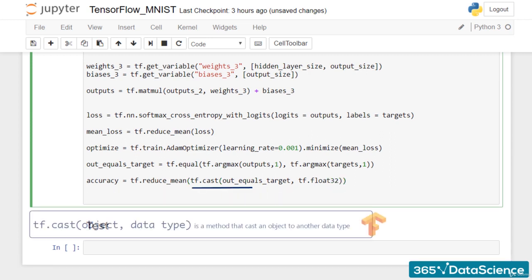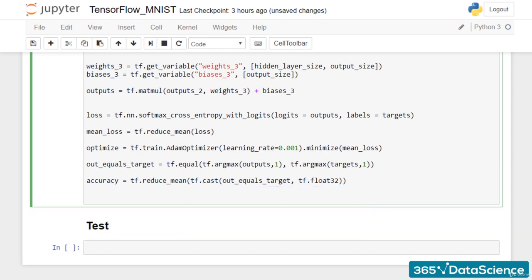The proper method here is tf.cast. tf.cast has two arguments, the object in question and the data type which we want to cast it. Alright. These two lines of code will calculate the average training accuracy of the model, which will be a number from 0 to 1.